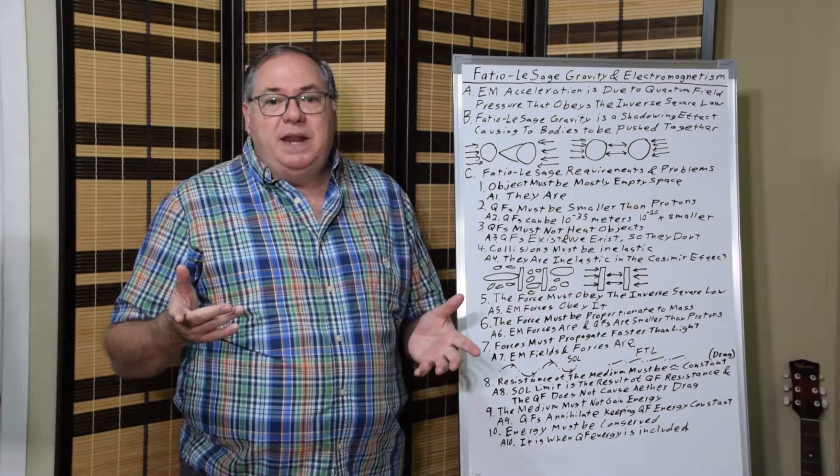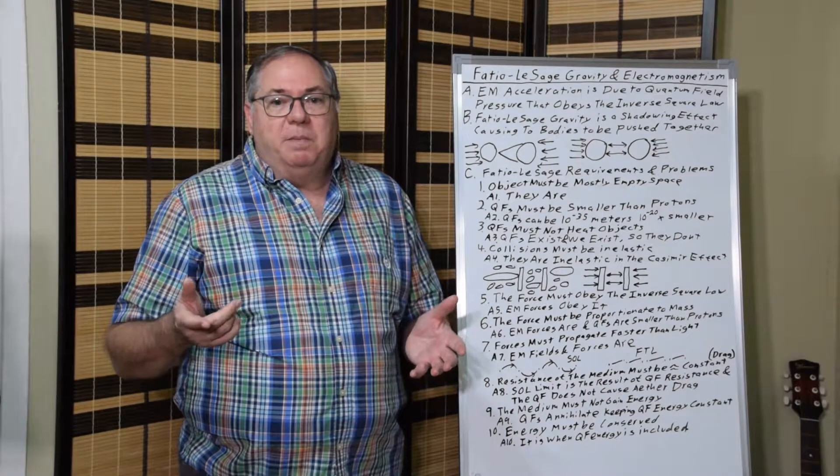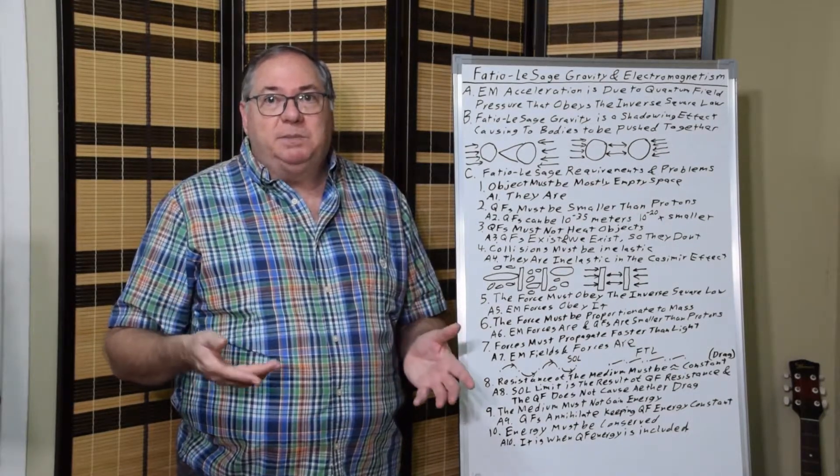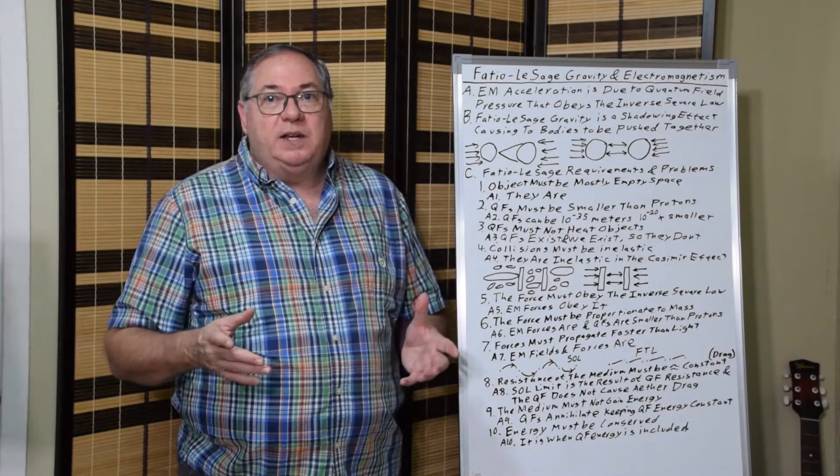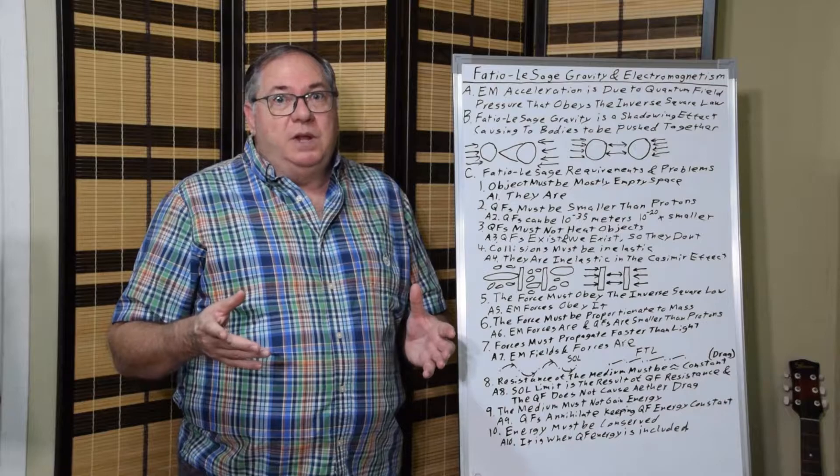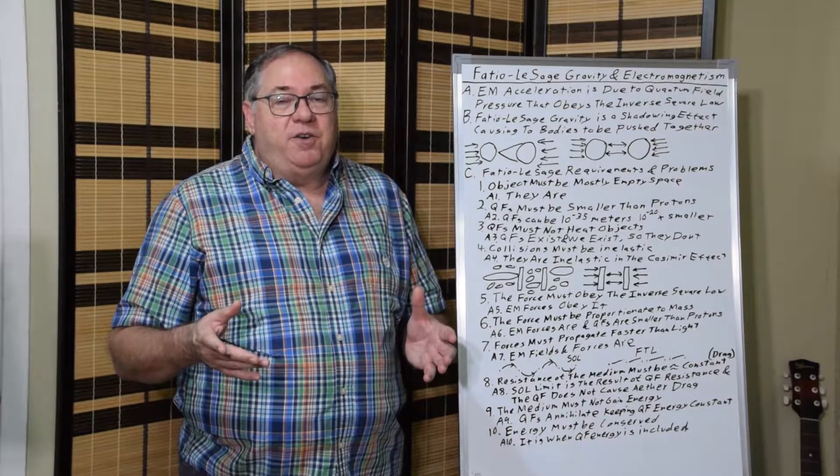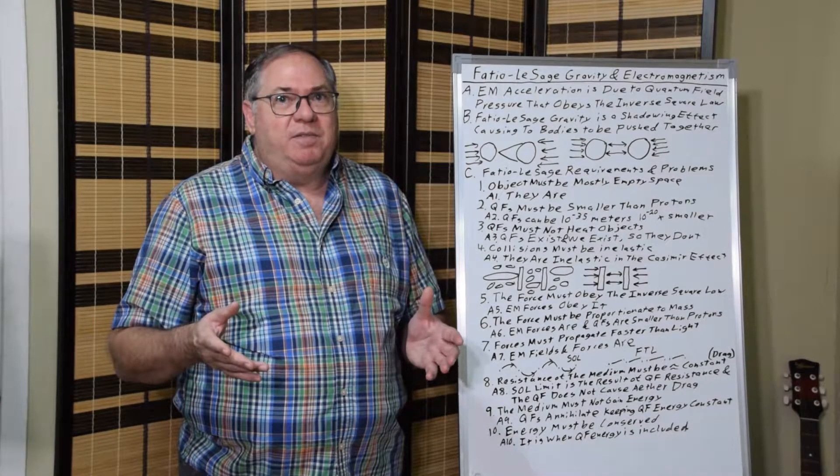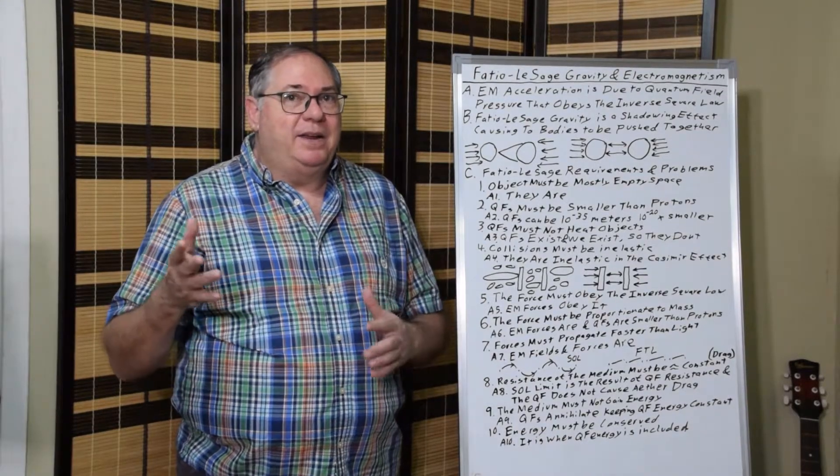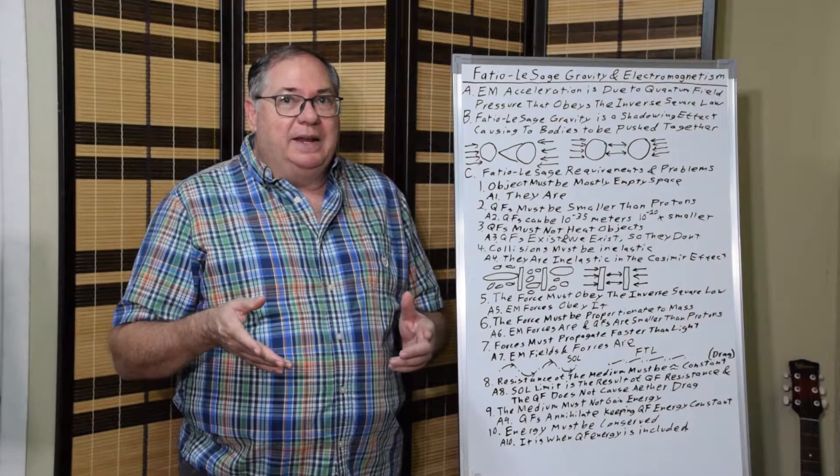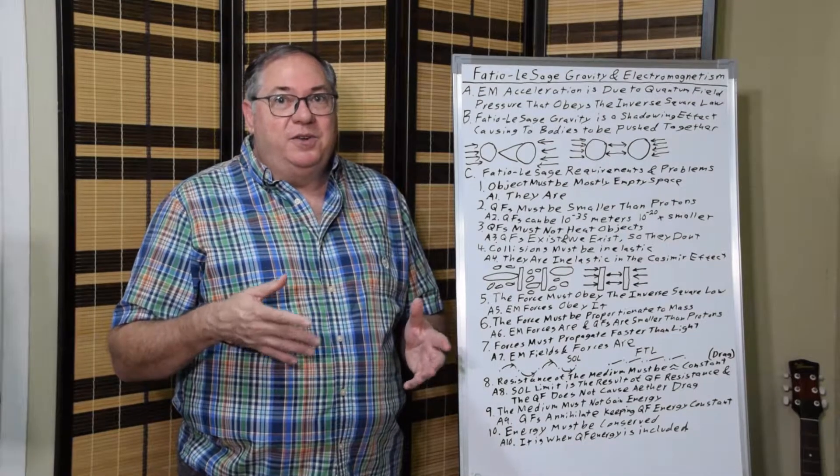Then the resistance of the medium must not cause a drag. It must be constant. And this is another case where, well, if the Earth was under a drag, then we would have either fallen into the Sun or been spun out in space, depending on how you calculate it. And so there's no drag on the Earth, no significant drag.